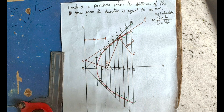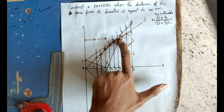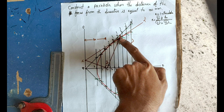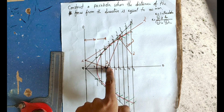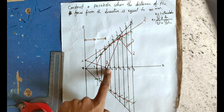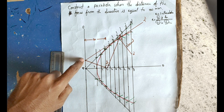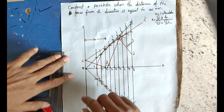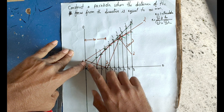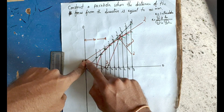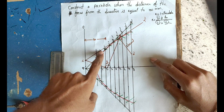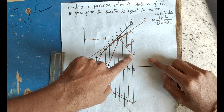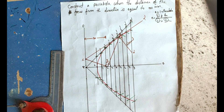We draw a normal and tangent line to the parabola. The tangent line is drawn at the selected point on the parabola. This line is perpendicular to the directrix. Mark the point, draw a line from the point focused on the first line, and this line perpendicular to the directrix gives the normal. The tangent is drawn at 90 degrees to the normal at that point.